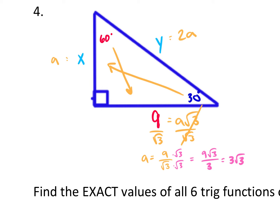So just a is 3√3, which is our x. To find the hypotenuse y, I multiply a times 2 — so 2 times 3√3. Multiply the whole numbers together: that gives 6√3.